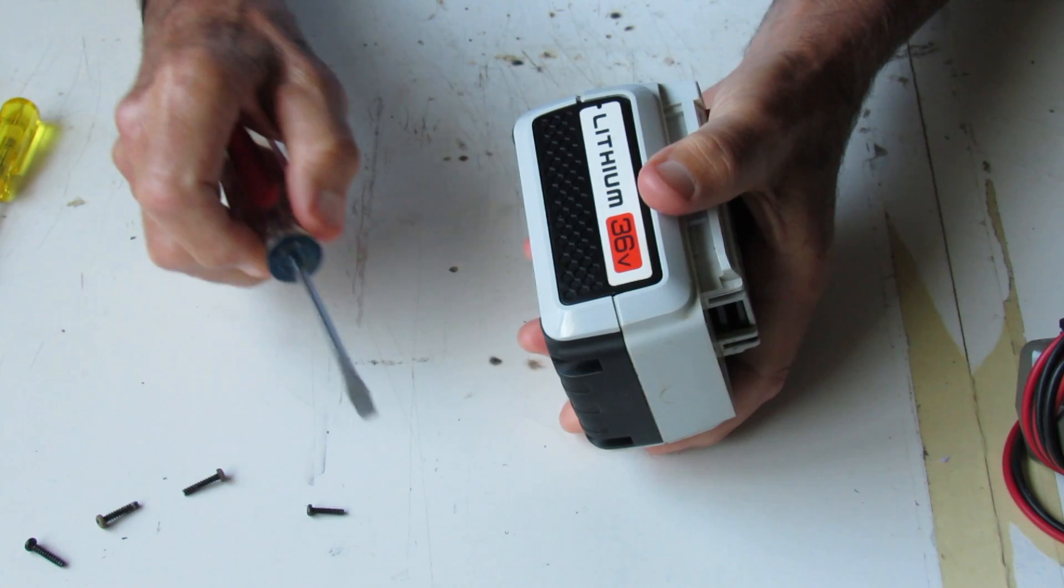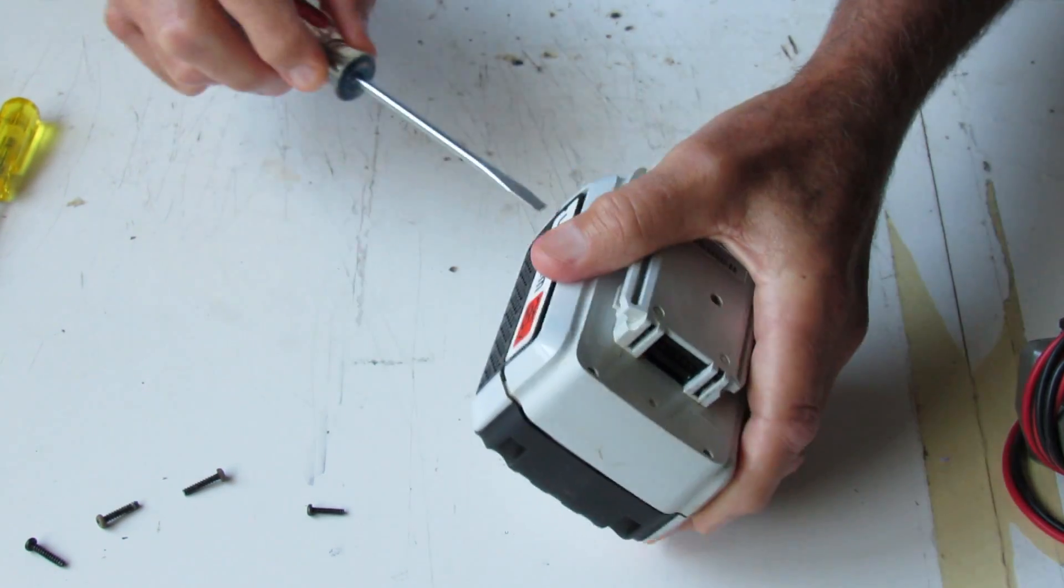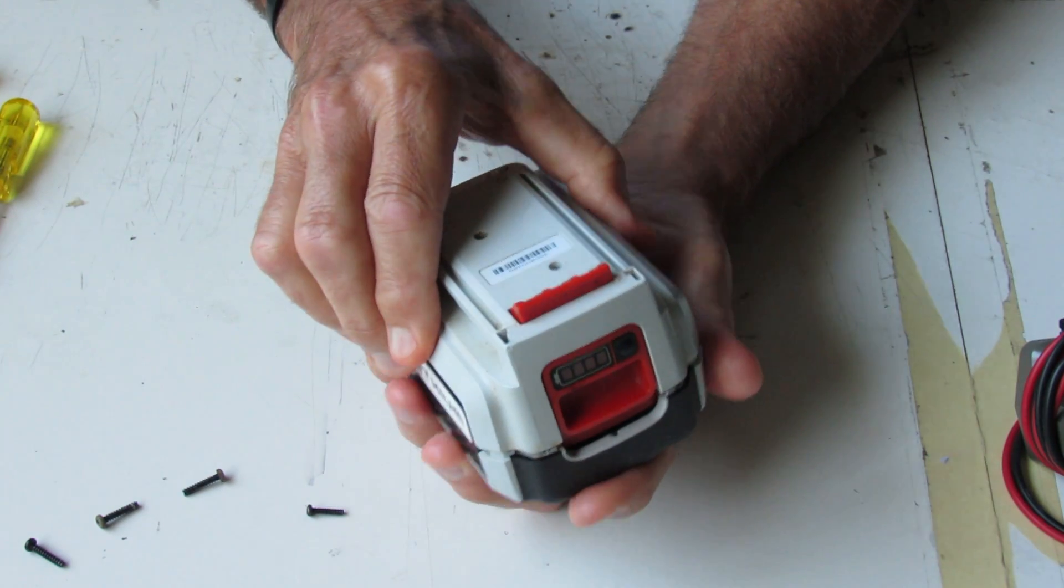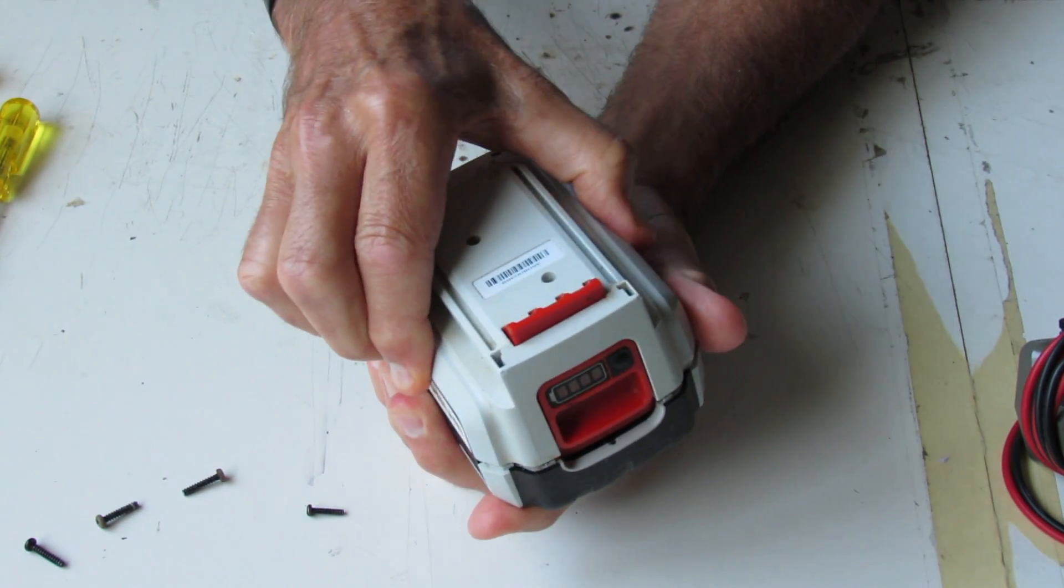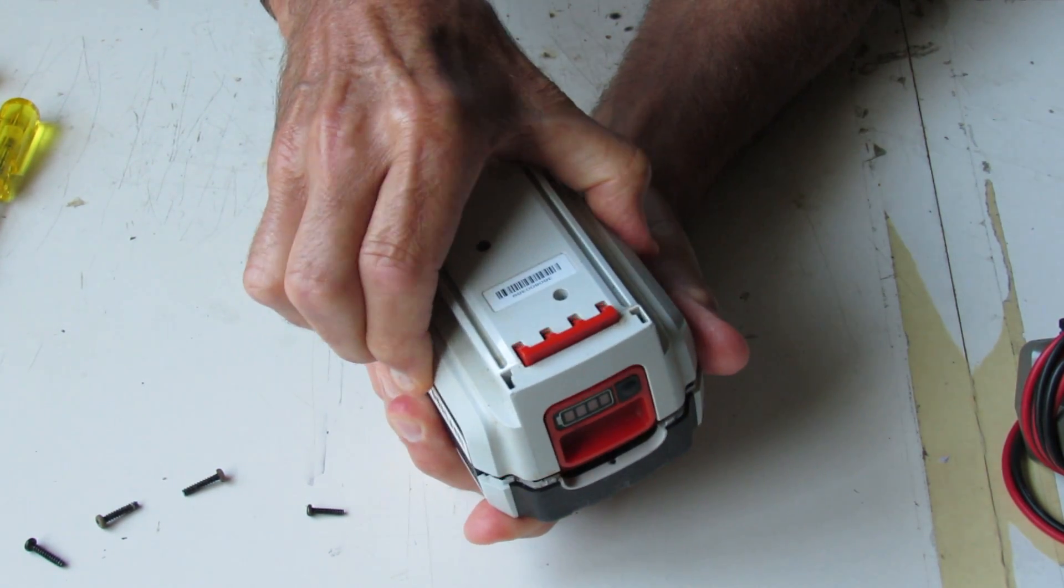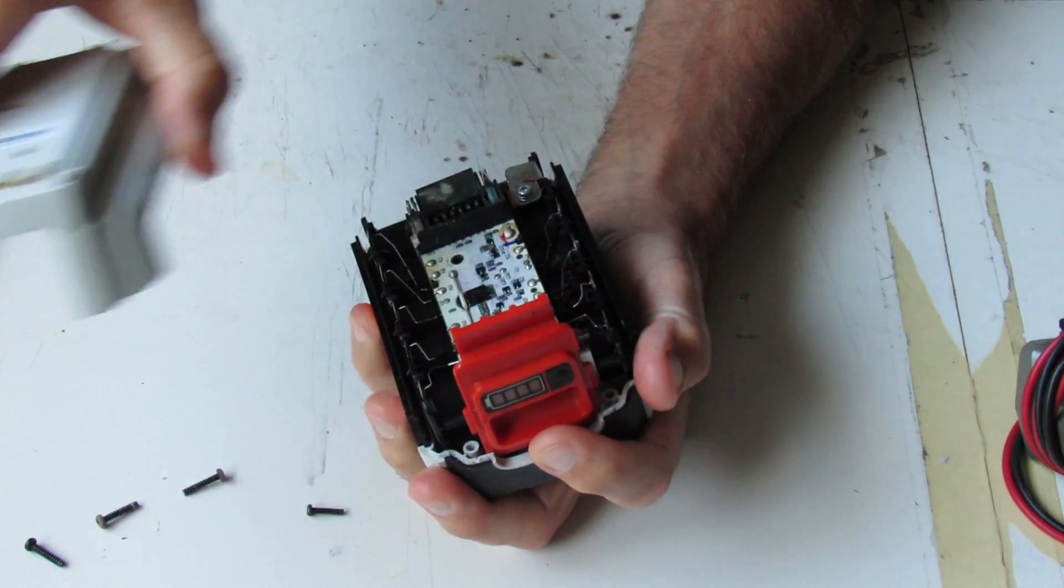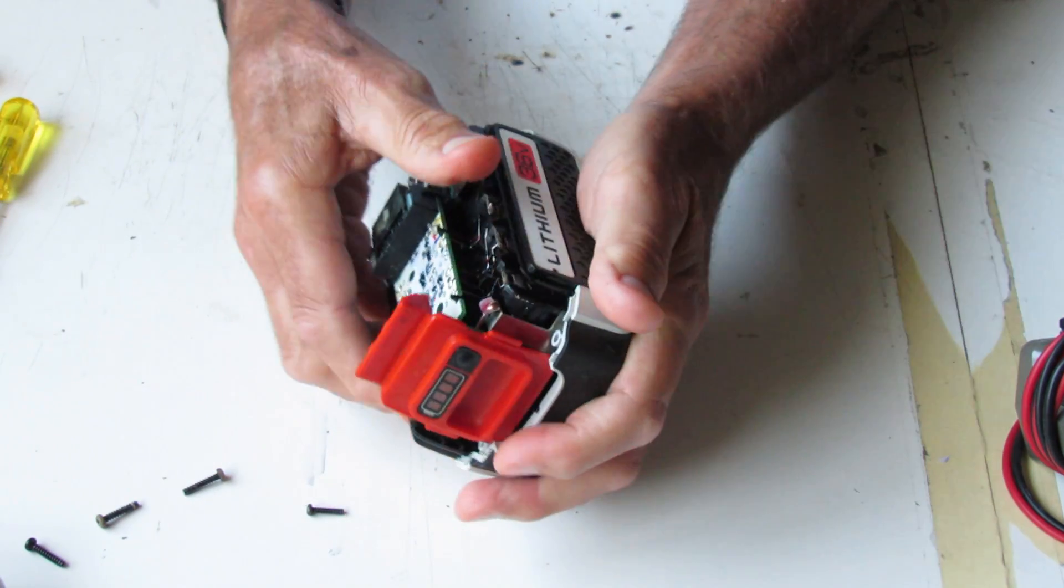Gently trying to work the case apart. That doesn't do it. Using a screwdriver to gently pry at the split. The batteries and electronics are self-contained, so it should just pull apart freely.